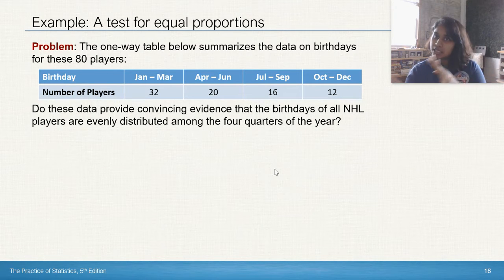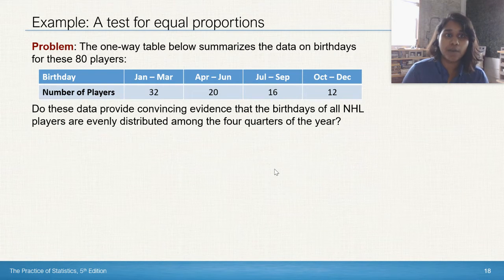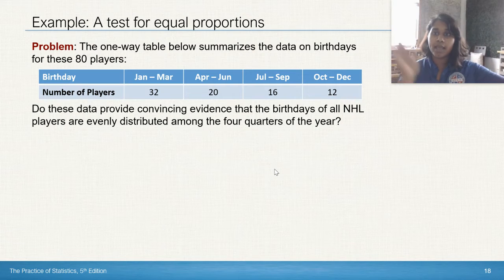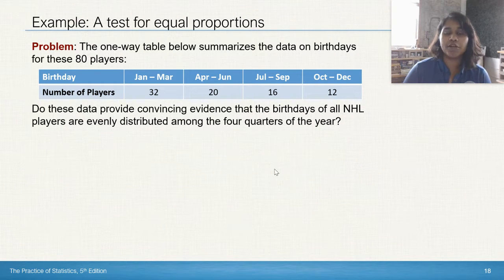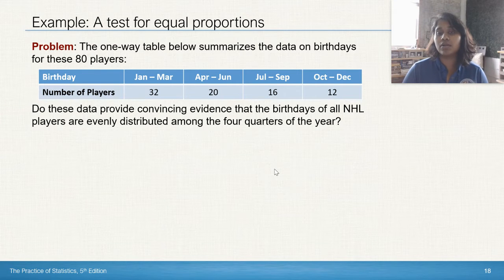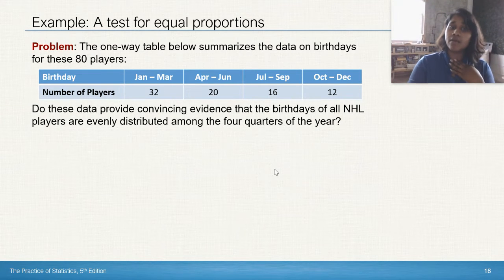Just looking at it, you see a serious decline as we go. So can we just already say, yes, people born earlier in the year, they had a better chance at making it into the NHL. Unfortunately, we can't just say that. So do these data provide convincing evidence that the birthdays of all NHL players are evenly distributed among the four quarters of the year? Let's go ahead and begin. We're going to do a state plan, do conclude.